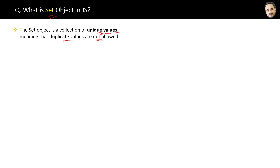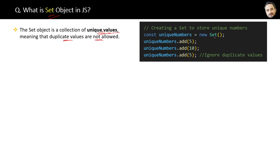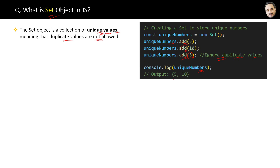This is the way we can create a Set for storing unique numbers. We can add values to the Set by using the add method. But if we try to add some duplicate value again, the Set will simply ignore it and will not store it. Finally, log the unique number Set and here is the result — unique values only.